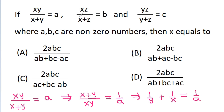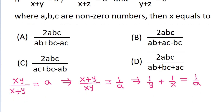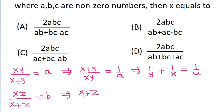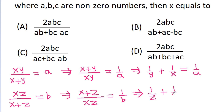And we have xz by x plus z is equal to b, so simplifying, x plus z by xz is equal to 1 by b, and simplifying x by xz is 1 by z plus z by xz is 1 by x, that is equal to 1 by b.